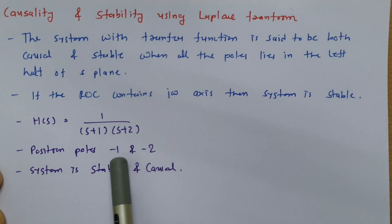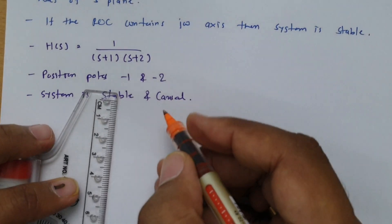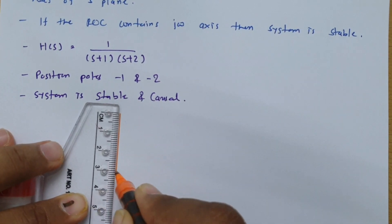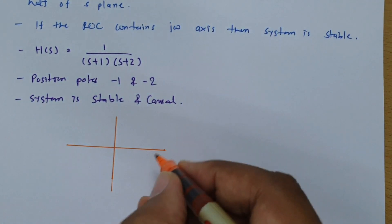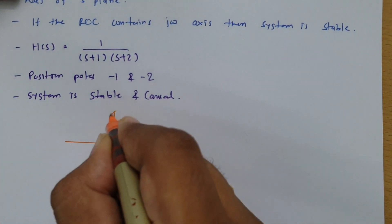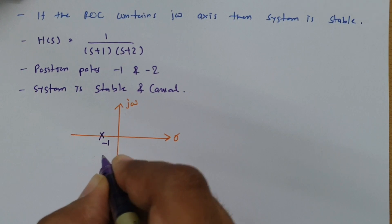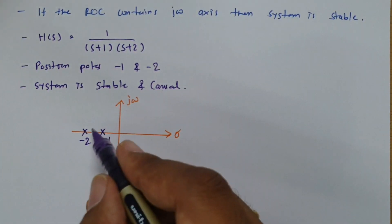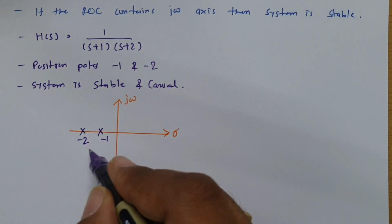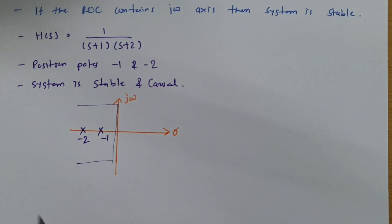The reason is the pole positions are at minus 1 and minus 2. If you plot that in the S-plane, the real axis is sigma and the imaginary axis is j-omega. Minus 1 and minus 2 are both on the real axis, happening in the left half of the S-plane. As they are in the left half of the S-plane, we can say this system is stable.